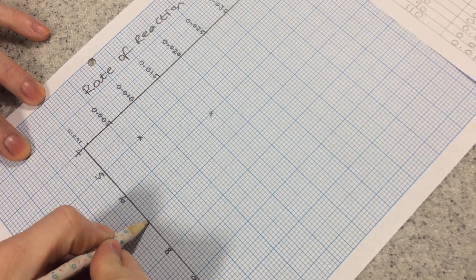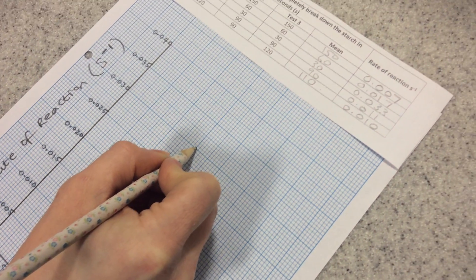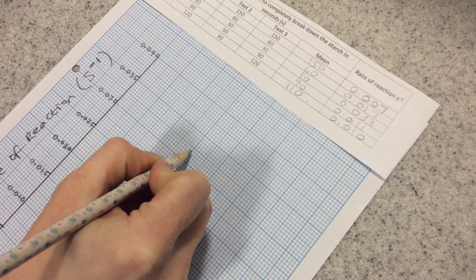At 7, I had 0.033, so there's 0.03, 1, 2, 3.